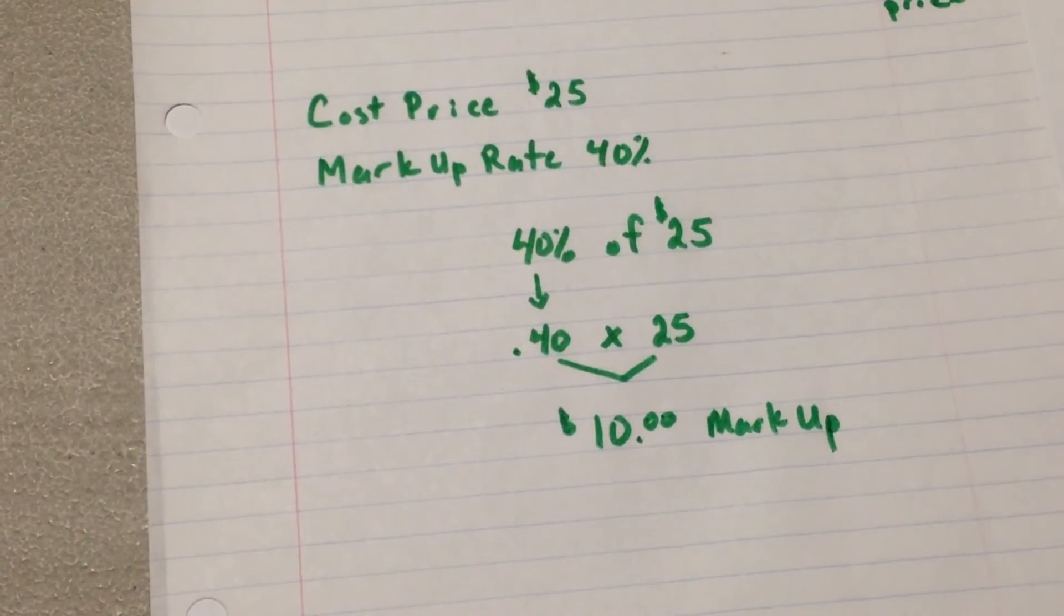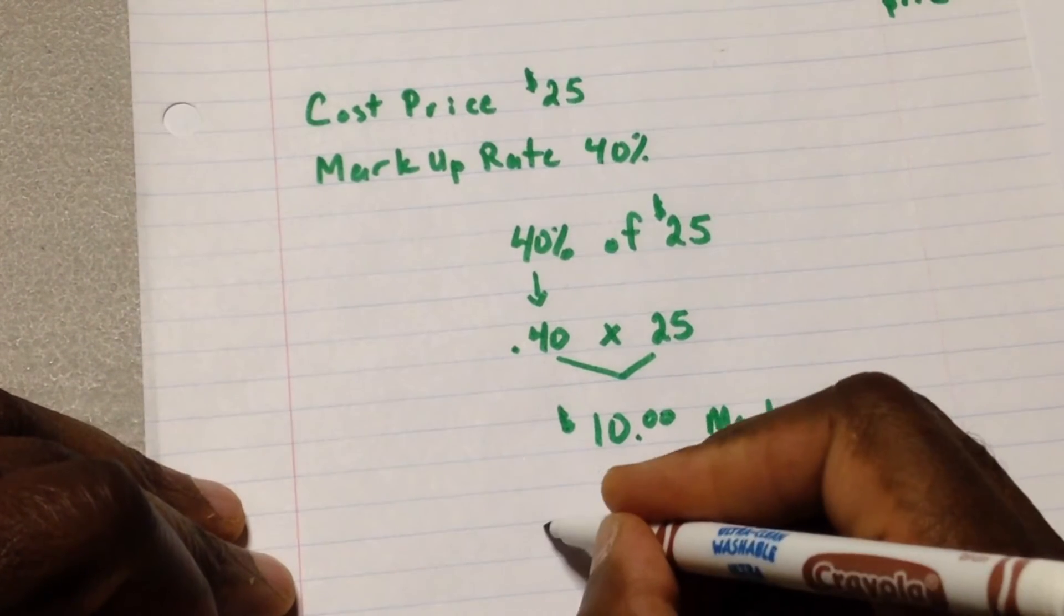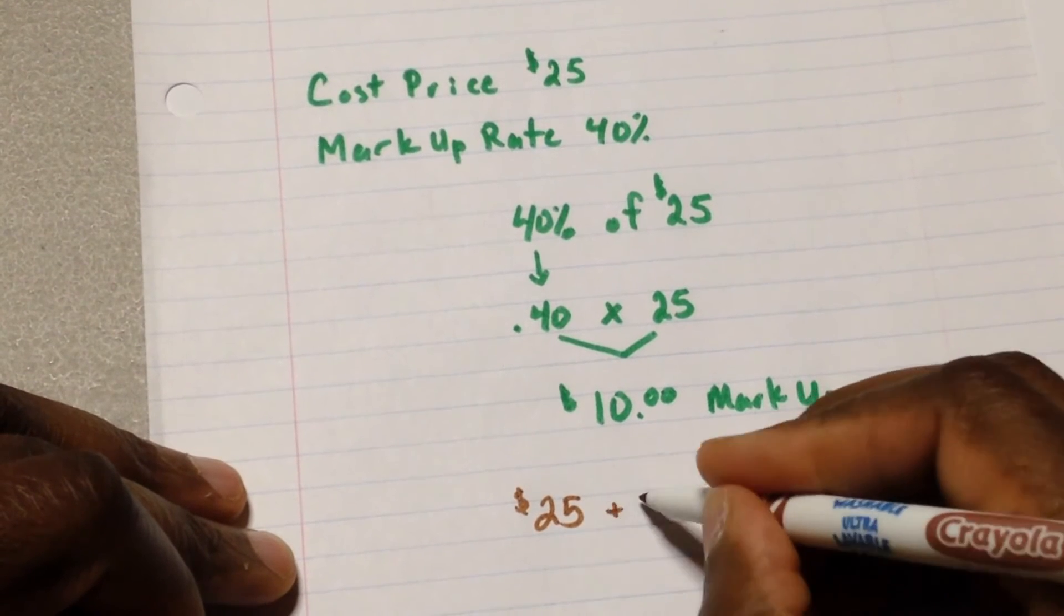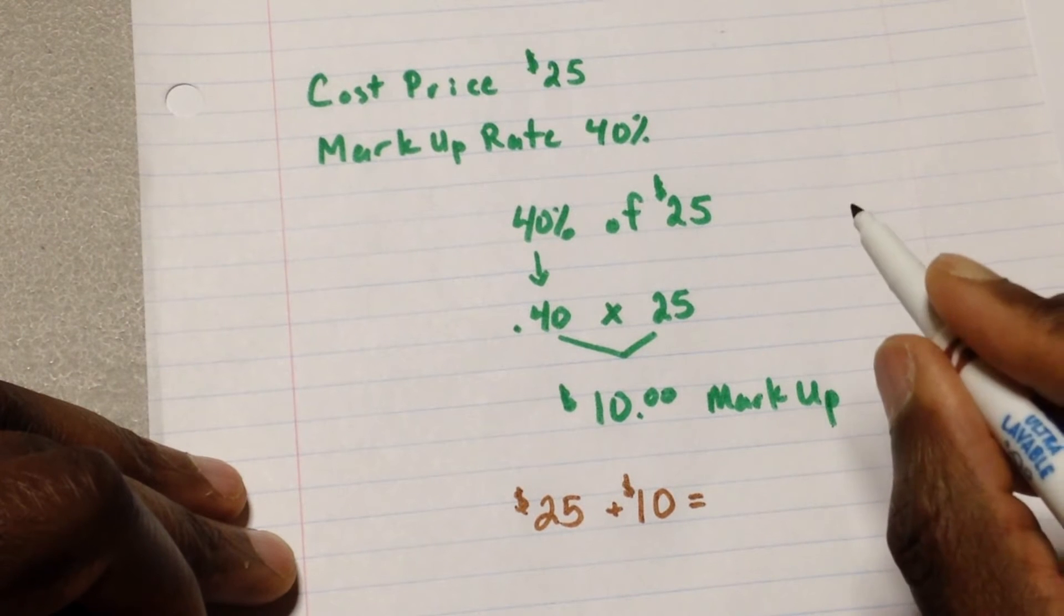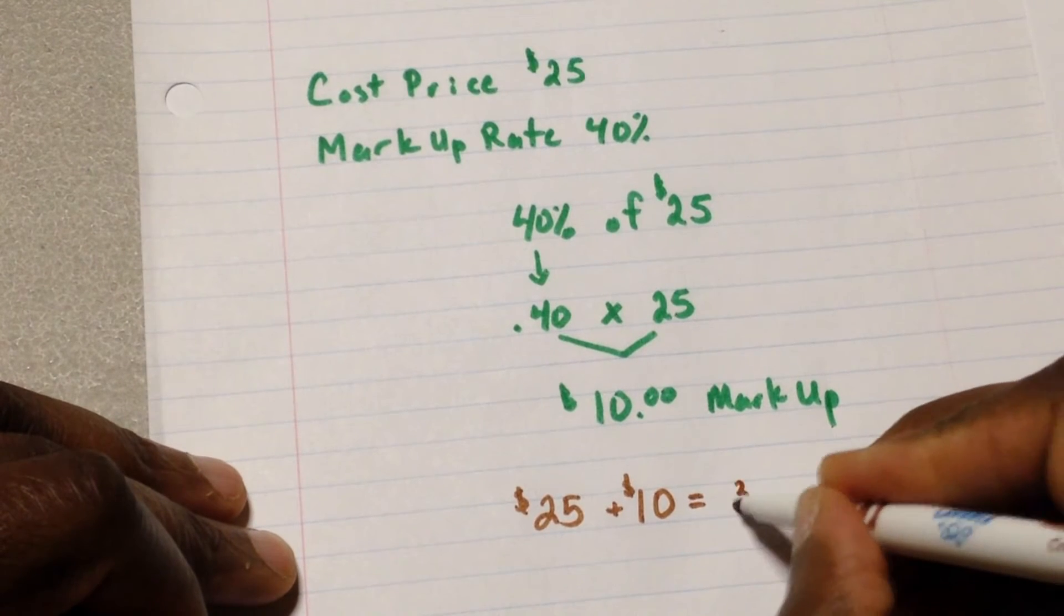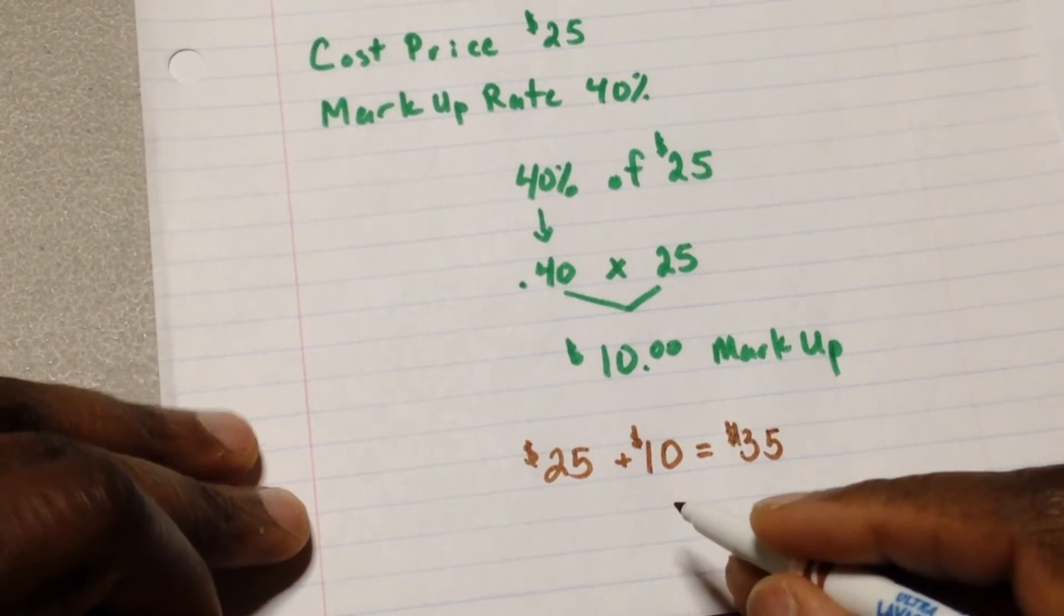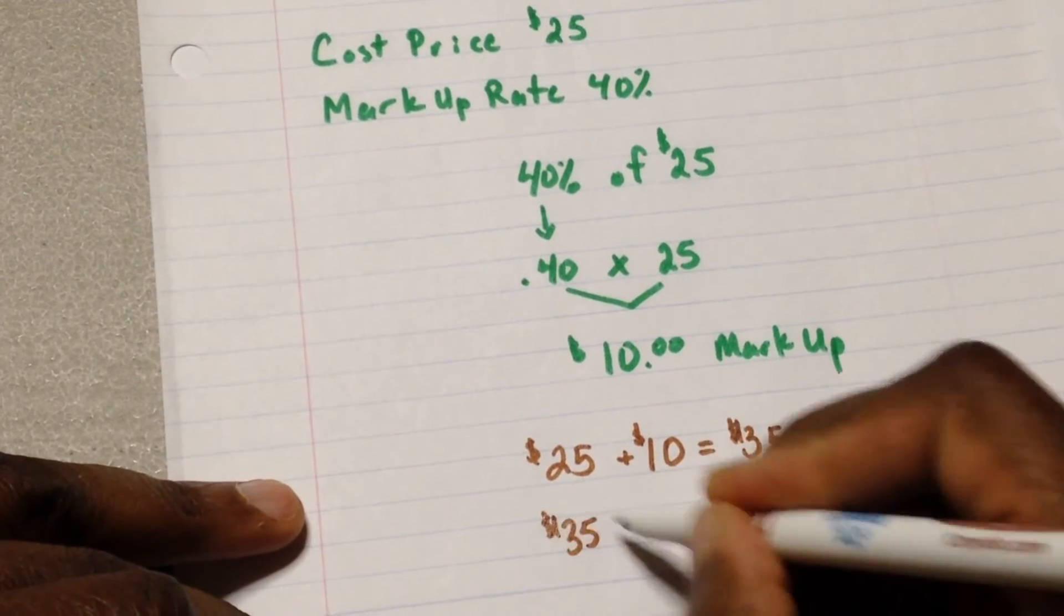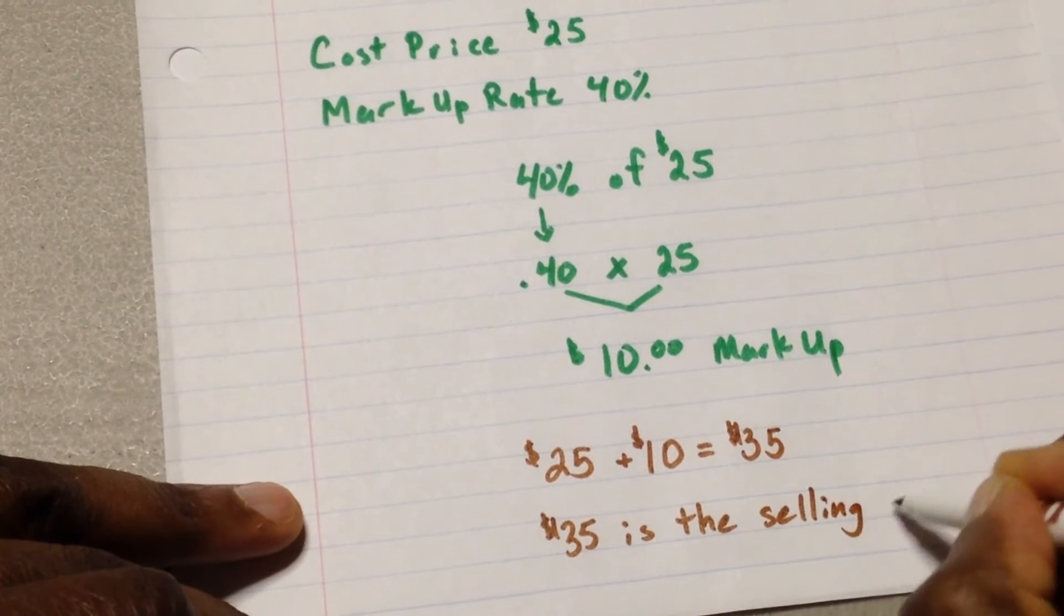So finally, let me just switch up colors here. Finally, let's take the cost price, which was $25. Right. And we add up with the markup price. So how much will the retailer sell it for? The retailer will sell it for $35. So $35 is the selling price. $35 is the selling price.